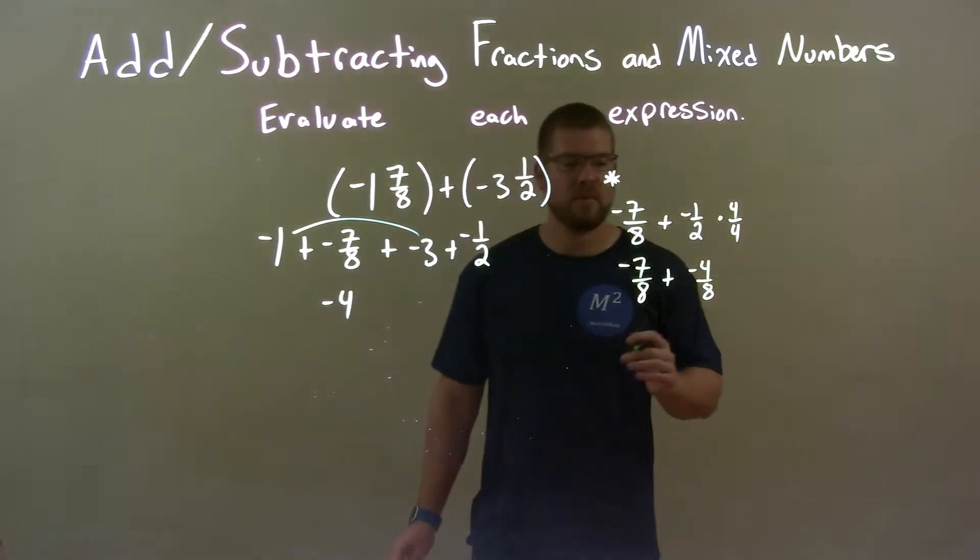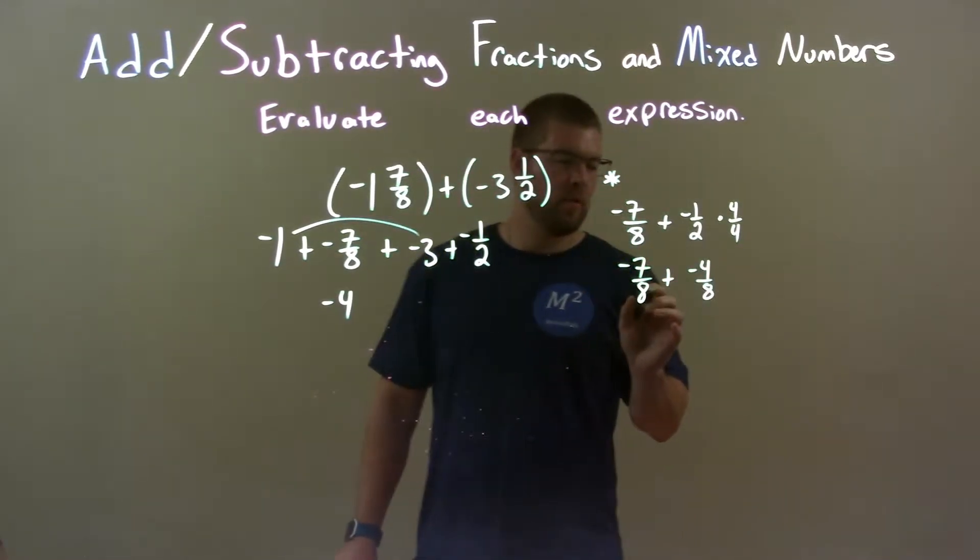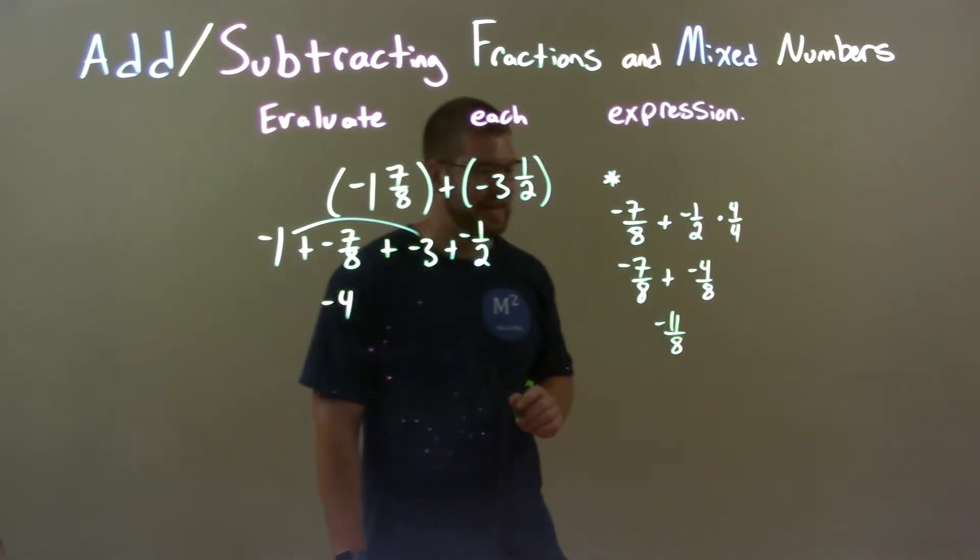That comes out to be, well, we add our negatives here. We keep the denominator same, add the numerator. Negative 7 plus a negative 4 is a negative 11. So, we have negative 11 over 8 here.